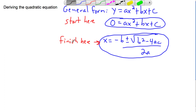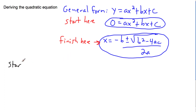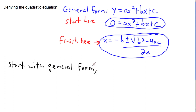The way we go about doing it is to start with general form and use what we looked at before — completing the square. So we start with general form and we're going to complete the square to get vertex form.